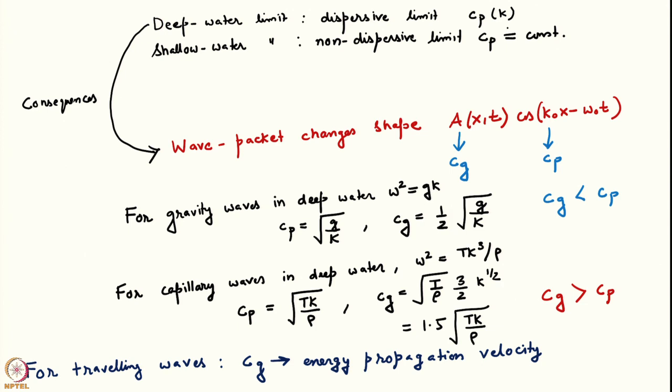Now let us go over to the last topic we have not covered so far: the axisymmetric Cauchy-Poisson problem. We have looked at the Cauchy-Poisson problem in two dimensions, solved it for a delta function initial condition, and approximated the solution using the method of stationary phase, which gave us the concept of group velocity. Now let us ask what happens if our pool is cylindrical and waves start spreading out radially. We have already shown that the final answer is expressible as a Hankel transform.